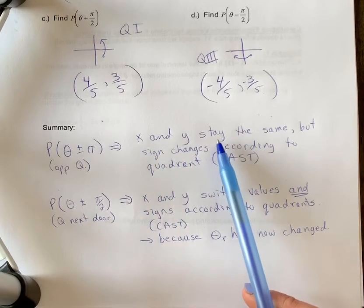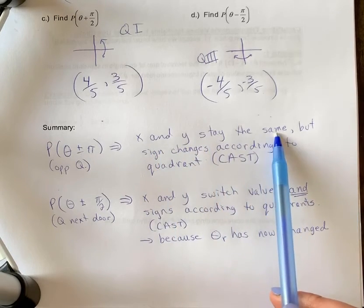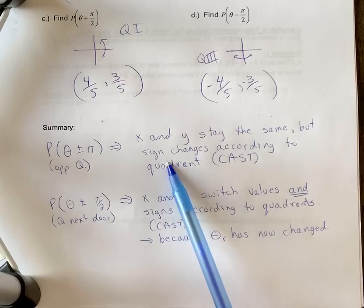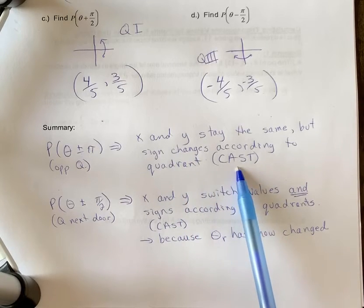What's going to happen is the x and y stay the same, but the sign changes according to the quadrants or the CAST rule.